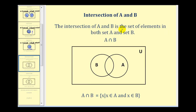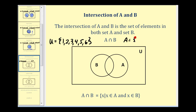The intersection of A and B is the set of elements in both set A and set B. Using symbols, A intersection B is equal to all elements x such that x is contained within A and contained within B. So the universal set is equal to one, two, three, four, five, six, and we have set A equal to two, three, and four, and set B equal to three, four, five.